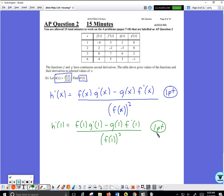You can't stop there because they do expect you to go find the values. So we say h'(1) will equal—get back up to the top—so f when x is one is negative six, so we'll put that in parentheses. g'(1)—g prime when x is one is eight.